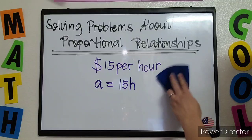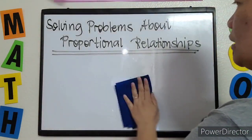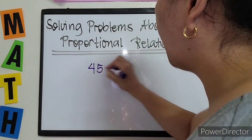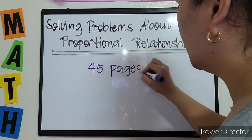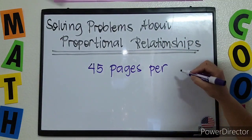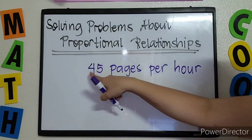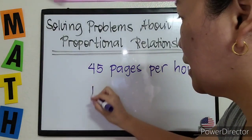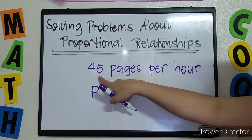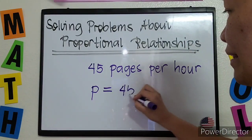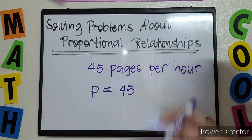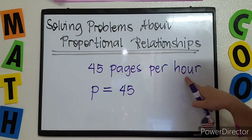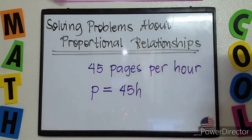Another example: in a given word problem, the unit rate is 45 pages per hour. We are talking of pages — the number of pages is 45. So therefore, it's P equals 45, and then the word with 'per' or 'each' or 'one' — that is the variable that will go with your k. Here it's per hour, so 45h.